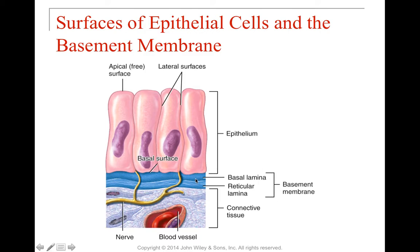The connective tissue is going to be vascularized — the blood vessel and blood going through it. Remember, the epithelial tissue is avascular. Nervous tissue is shown in yellow, and throughout the semester you'll see blood vessels and blood cells in red, epithelial tissue with pink cells and purple nuclei, and nervous tissue shown as yellow. You'll start to recognize these major features as we work through the course.